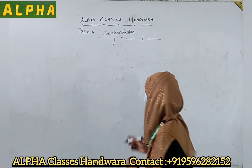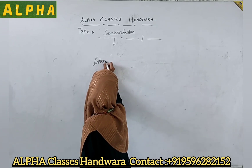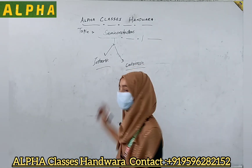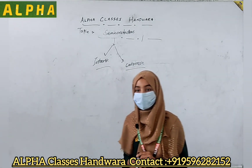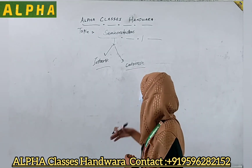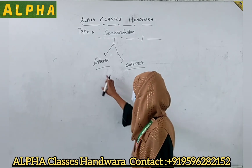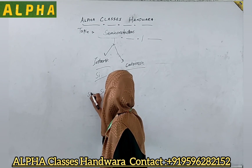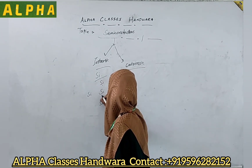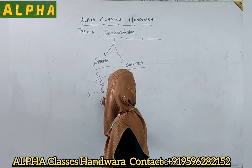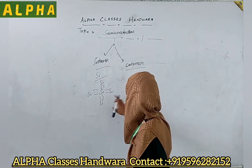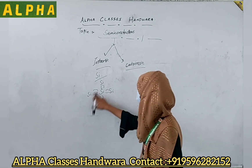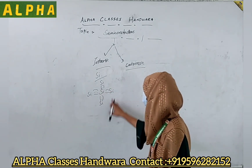Semiconductors are of two types: intrinsic semiconductors and extrinsic semiconductors. Intrinsic semiconductors are pure semiconductors in which no impurity has been added. For example, silicon is a tetravalent element. Silicon forms bonds with four other silicon atoms. In this pure semiconductor we have not added any impurity.